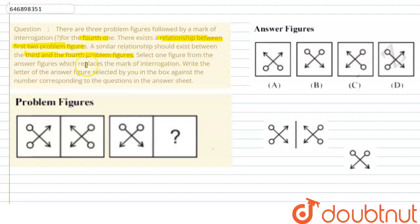Select one figure from the answer figures which replaces the mark of interrogation. Write the letter of the answer figure selected by you in the box against the number corresponding to the question in the answer sheet.